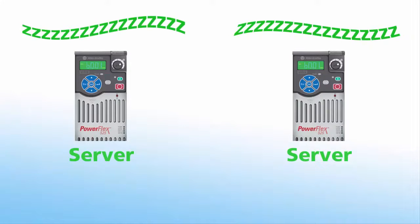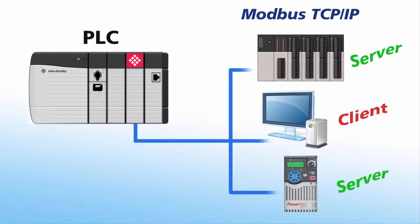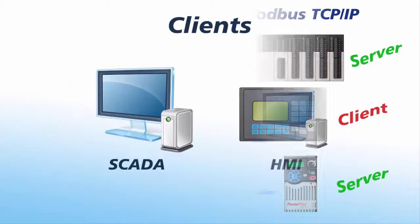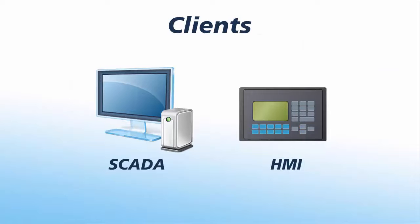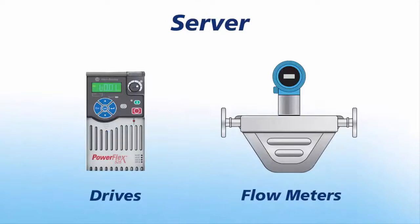A PLC can act as a client or server on the same network, communicating with various server devices and clients simultaneously. On the other hand, SCADA host or HMI terminals are almost always configured as a client, talking to servers. Devices such as variable frequency drives and flow meters typically act as a server and must be polled by a client.